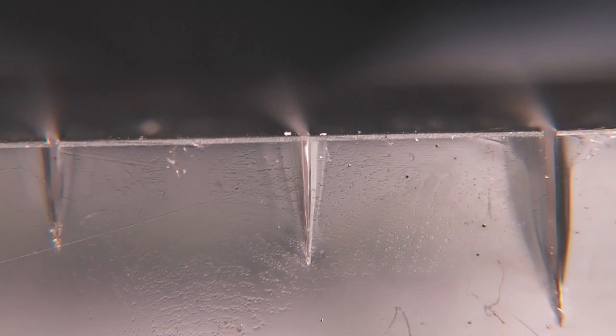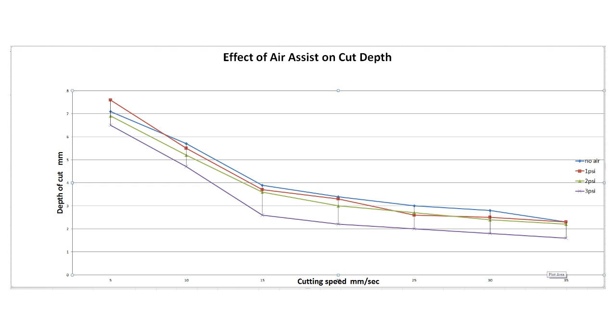Now as far as our beam penetration tests are concerned, quite interesting results. Now the red and blue lines on this graph are more or less the same depth of cut. The red line is 1 psi of air, just enough to keep the gases flowing. Whereas in fact the higher pressures of 2 psi and 3 psi do have an effect on the depth of the cut as you can see.